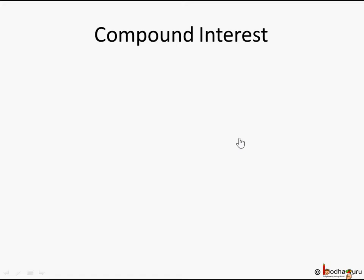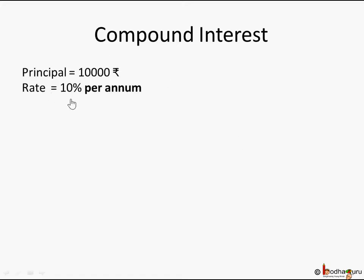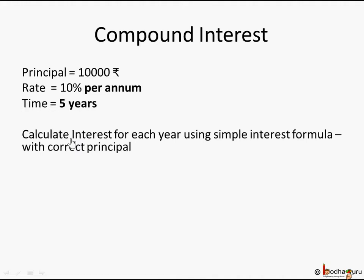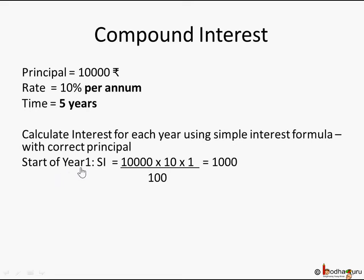In compound interest, the principal remains the same and the rate may also be the same at 10% per annum, and the time is also the same, but the interest gets compounded every year. This means you calculate the interest for one year and that interest gets added to the principal for the next year. At the start of year one the principal is 10,000 rupees.